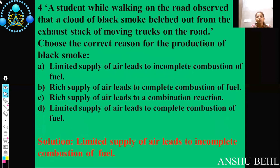Fourth question: a student while walking on the road observed a cloud of black smoke coming out from the exhaust stack of a moving truck. Choose the correct reason for the production of black smoke. Black smoke is produced when something is burned in a limited supply of oxygen — incomplete combustion leads to black smoke. So the correct answer is: limited supply of air leads to incomplete combustion of fuel.